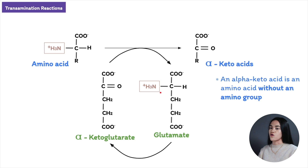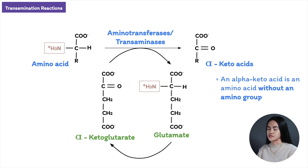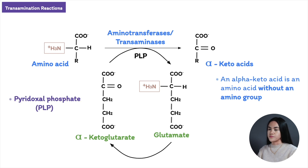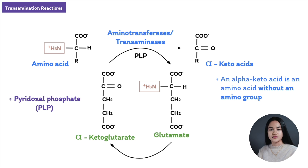Glutamate is a collector of amino groups and a donor of amino groups. The enzymes catalyzing this transamination process are called aminotransferases or transaminases. All aminotransferases have coenzymes called pyridoxal phosphate, or PLP. PLP is bound to the enzyme and accepts the amino group from the amino acid, and then the alpha-keto acid accepts the amino group from PLP. So PLP is the intermediate that accepts and passes the amino group.